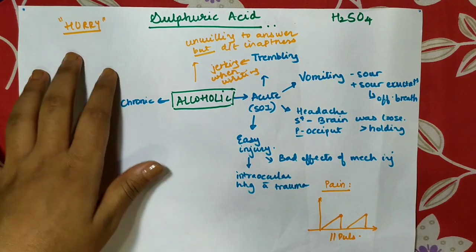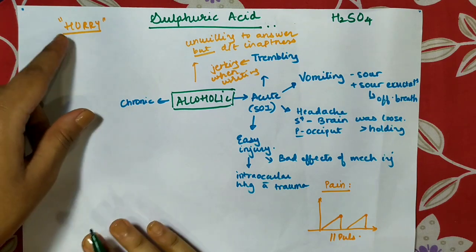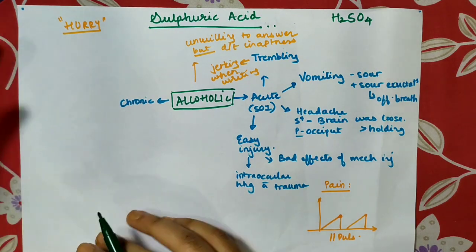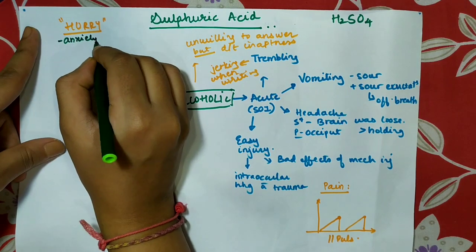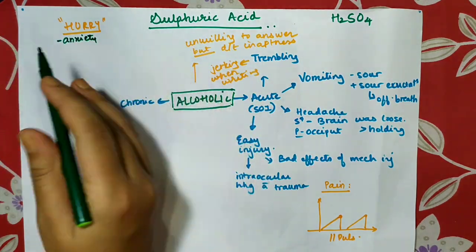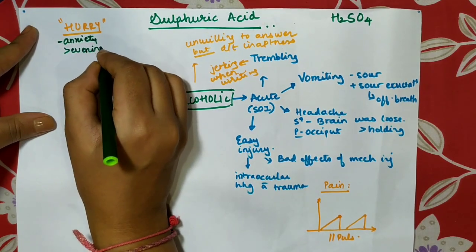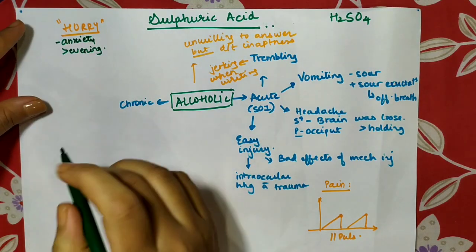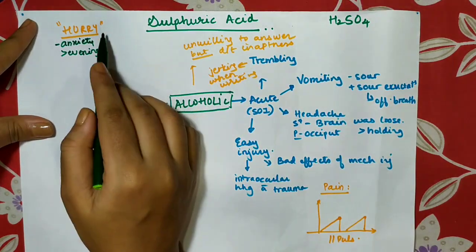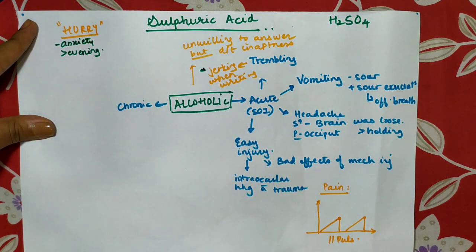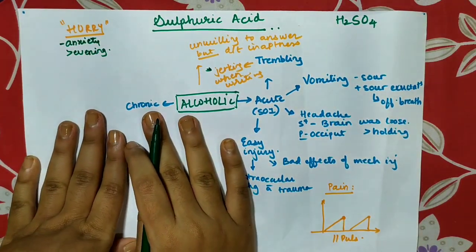Another important mental symptom is hurry. Dr. Sankaran describes the Sulfuric Acid patient as being in great hurry because he wants to get things done. This hurriedness is mainly due to anxiety, which is worse in the morning when he has planned tasks, and better in the evening when things are done. Rubrics like hurry while eating and hurry while writing all include Sulfuric Acid, which may also relate to jerking when writing.